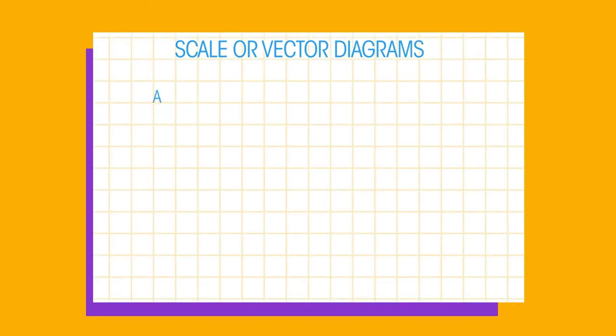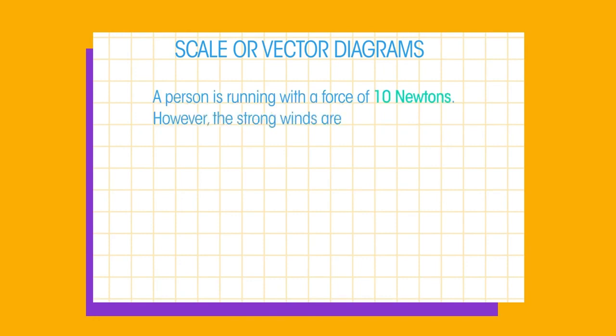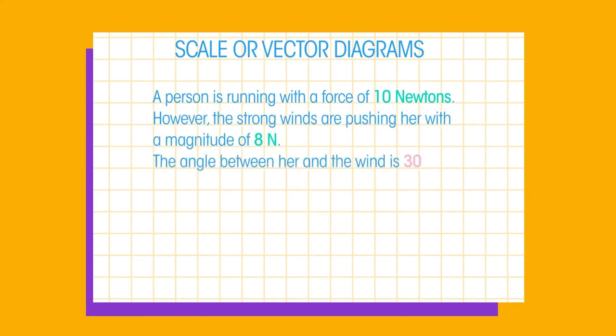Here's an example. A person is running with a force of 10 newtons. However, the strong winds are pushing her with a magnitude of 8 newtons. The angle between her and the wind is 30 degrees. Find the resultant force acting on the runner.